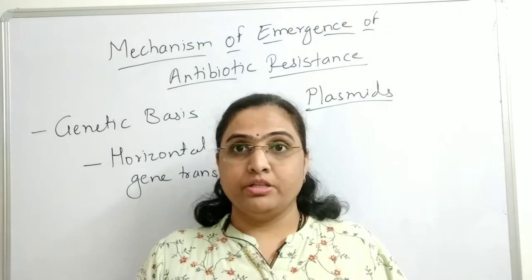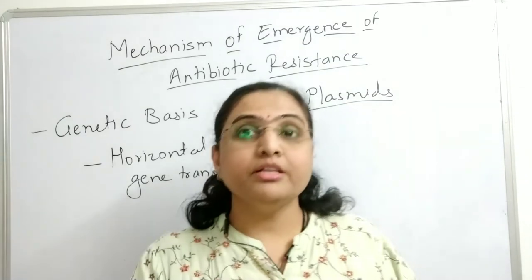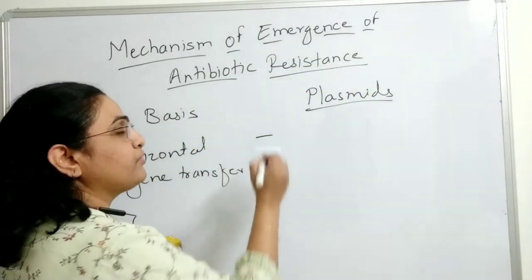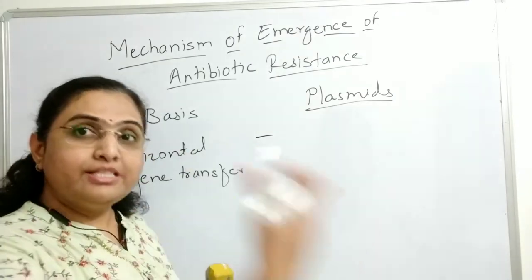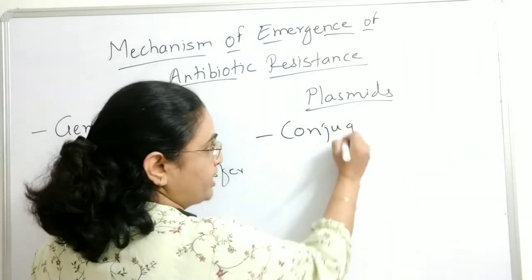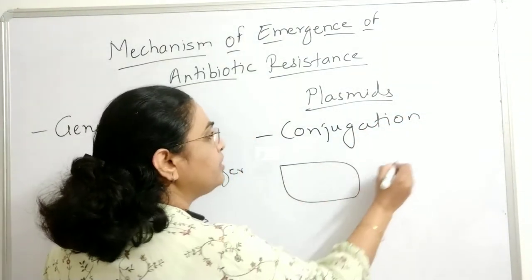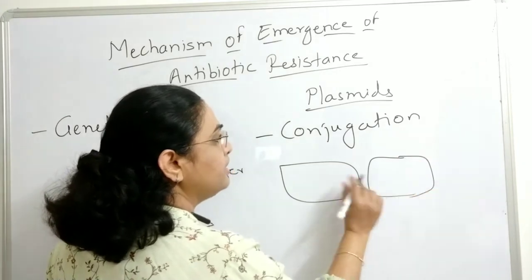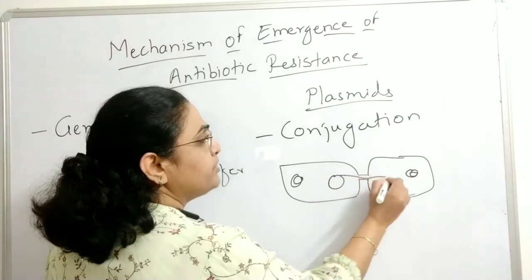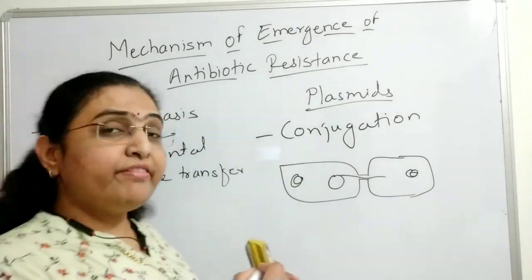Antibiotic resistance genes most of the time are present on plasmids, and these plasmids are transferred from one bacterial cell to another. The process by which a plasmid is transferred from donor bacteria to recipient bacteria is called conjugation — that is, by the direct contact of two bacterial cells with the help of the pilus.